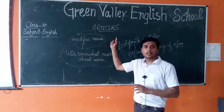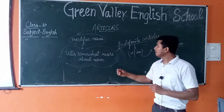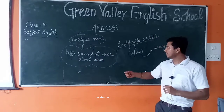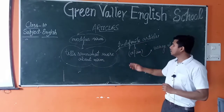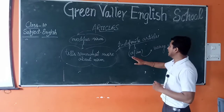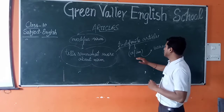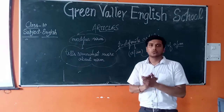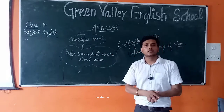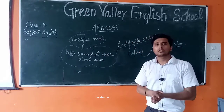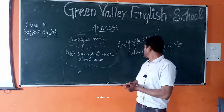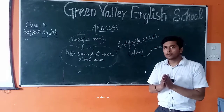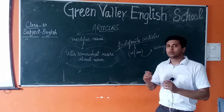We have discussed that an article modifies a noun and it tells somewhat more about the noun. We have discussed indefinite articles, and under that we have discussed a and an — their usage, where we have to use a and where we have to use an, on the basis of their sound: consonant sound and vowel sound. Today we are going to learn more about their usage on the basis of some points.